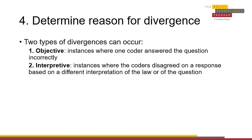Objective errors are instances where the original coder or the naive coder answered the question incorrectly. This could be because the coder forgot to answer a question, because of a typo, or because the coder misread a law. Interpretive errors are errors where coders reasonably came to different conclusions based on a different interpretation of the law. This could happen if two coders defined a key term differently or if the coding scheme is not yet well defined.